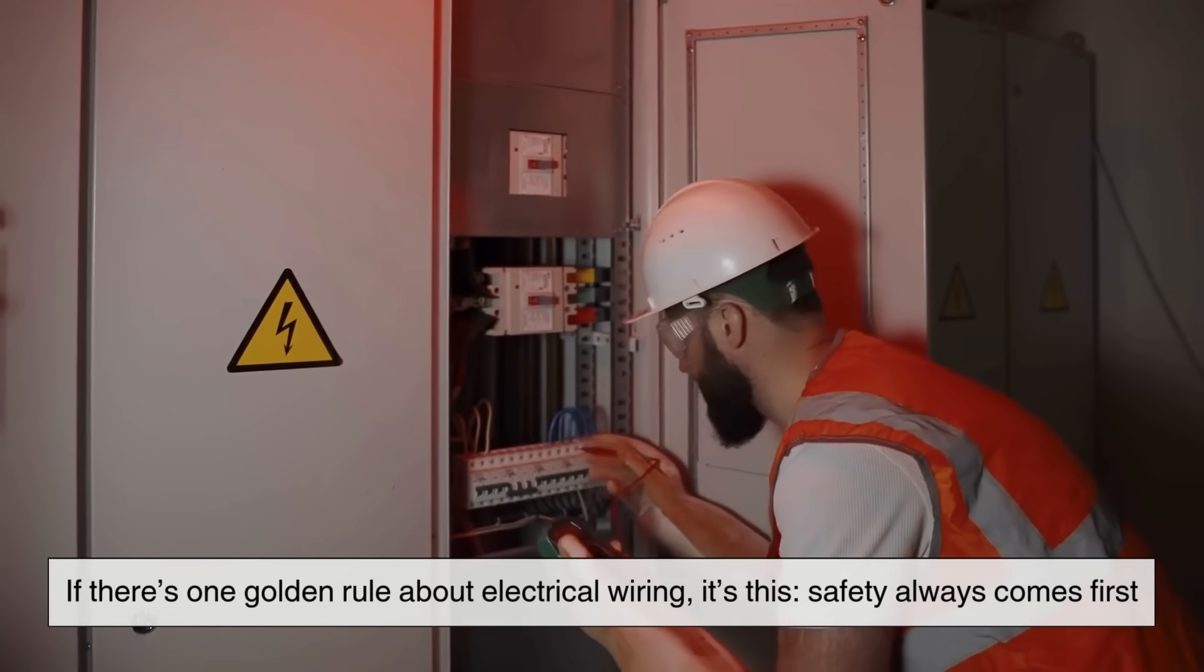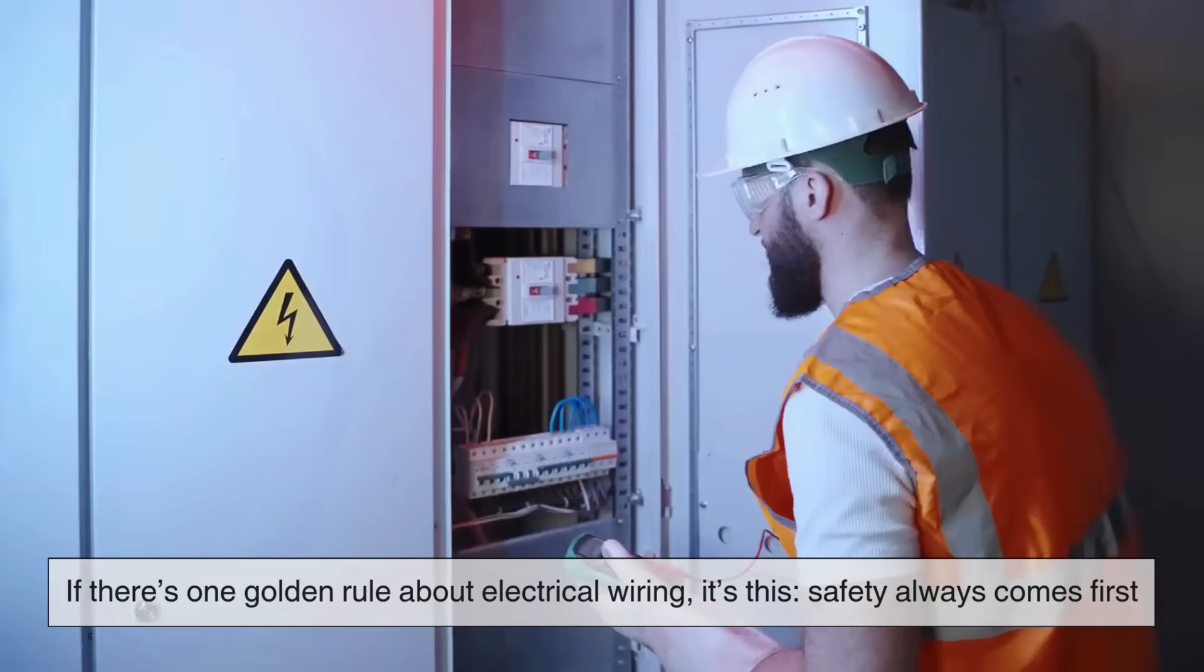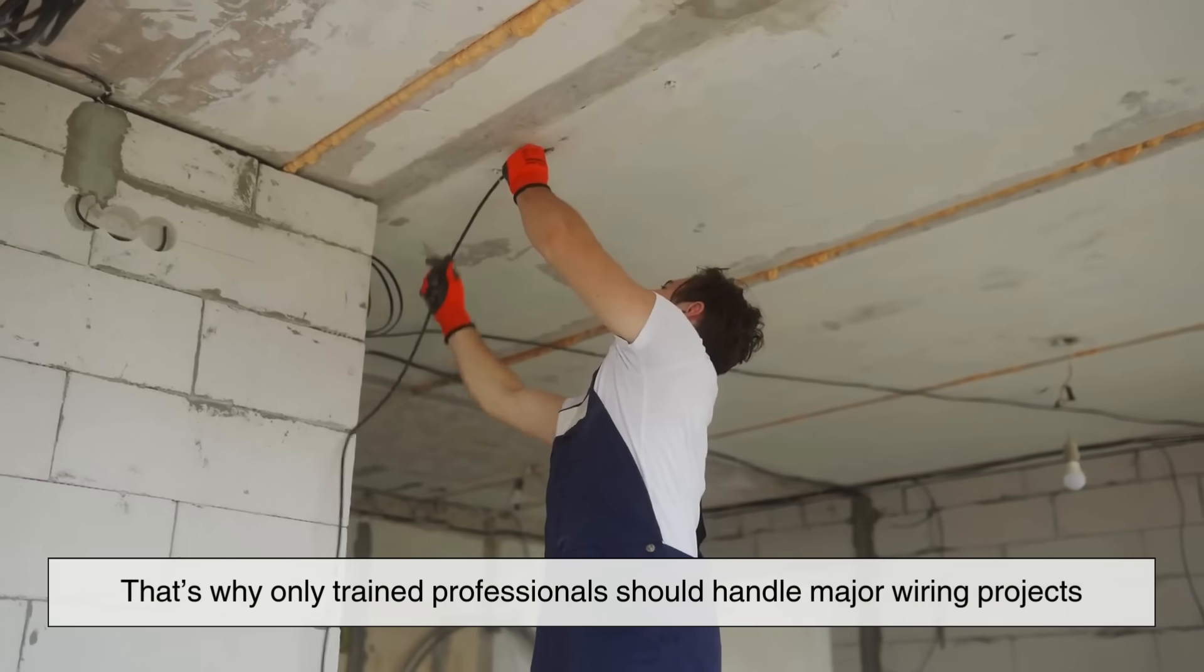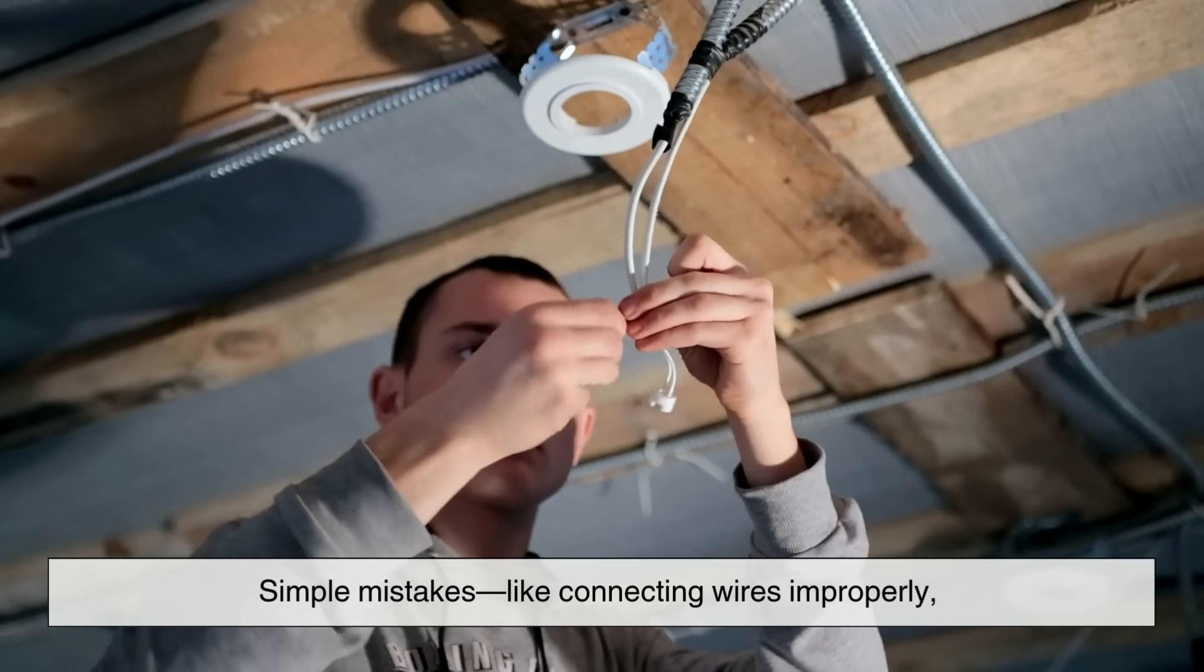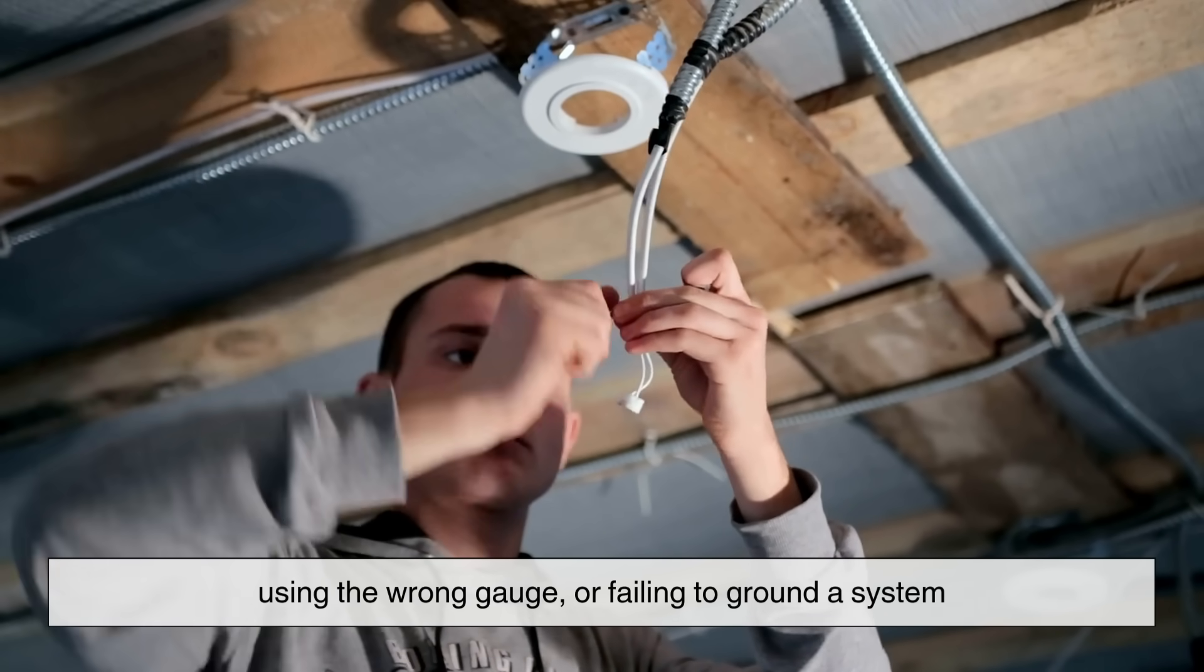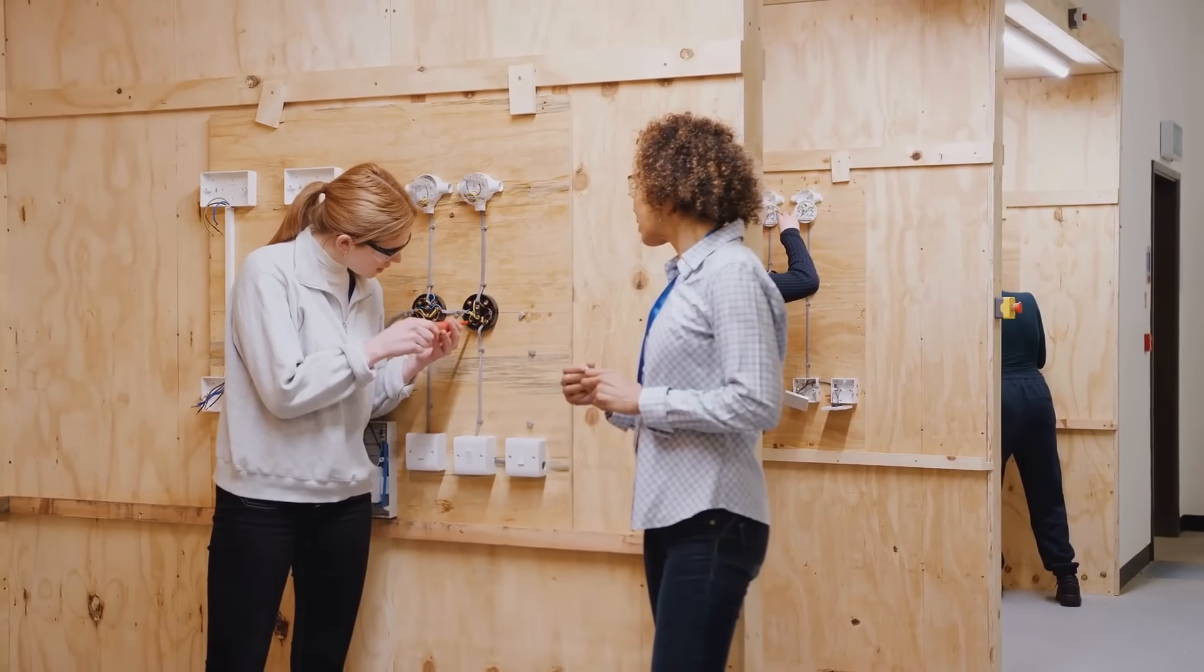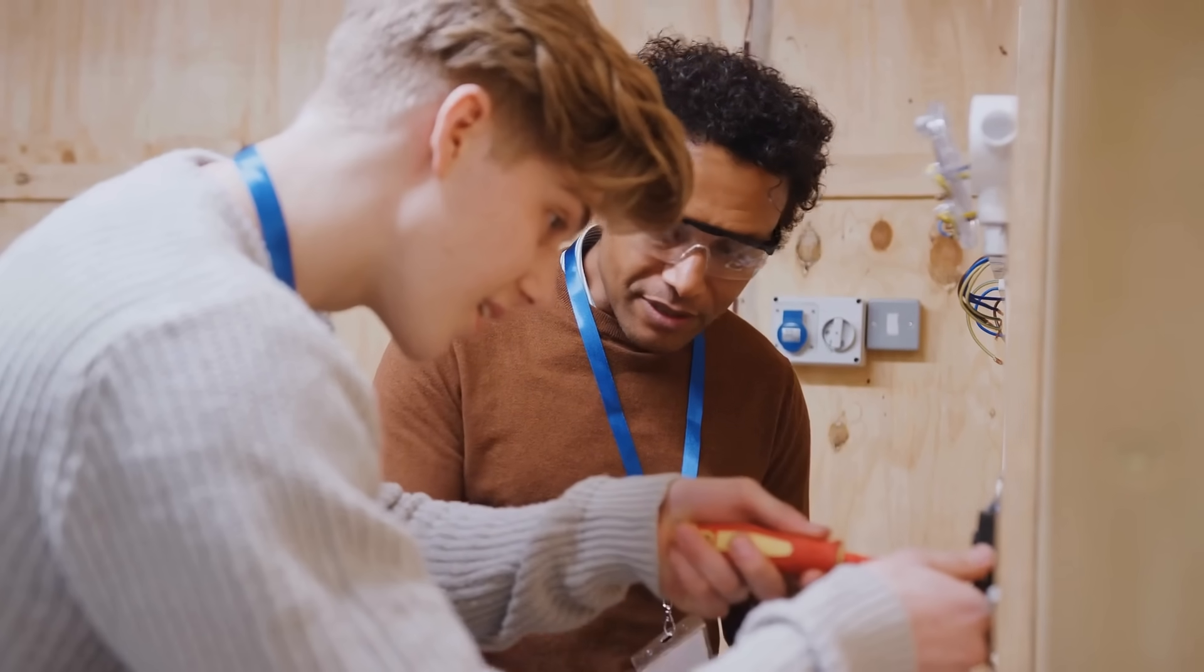If there's one golden rule about electrical wiring, it's this. Safety always comes first. Electricity is incredibly useful, but it can also be dangerous if mishandled. That's why only trained professionals should handle major wiring projects. Simple mistakes, like connecting wires improperly, using the wrong gauge, or failing to ground a system, can lead to shocks, fires, or equipment damage. That's why electricians spend years training and why building codes are so strict. They're not there to make life difficult. They're there to protect lives.